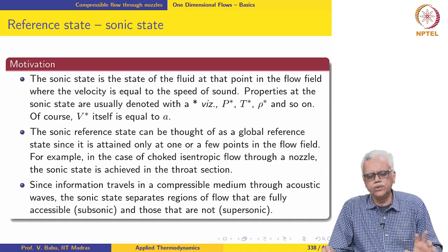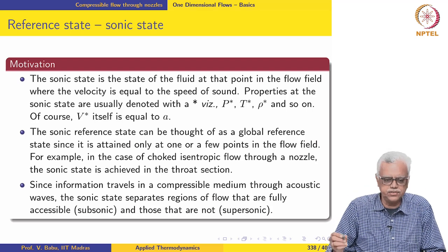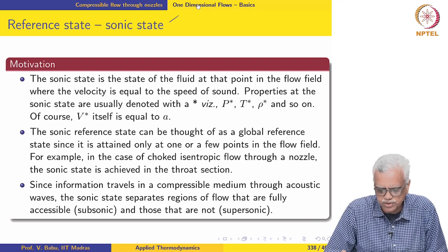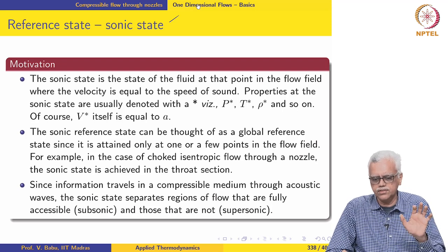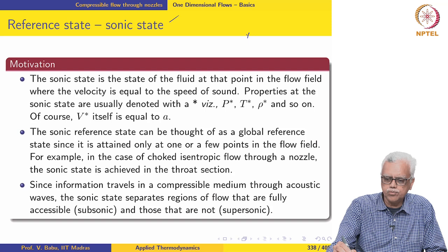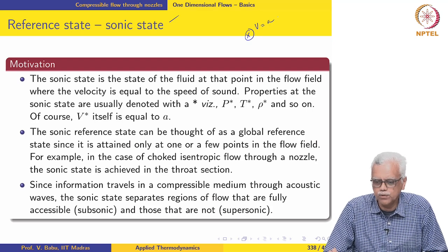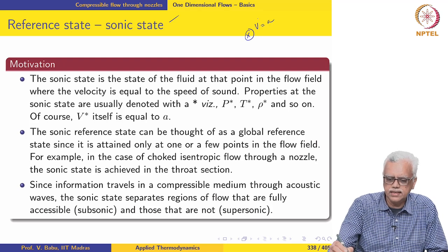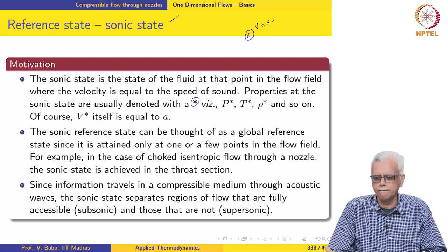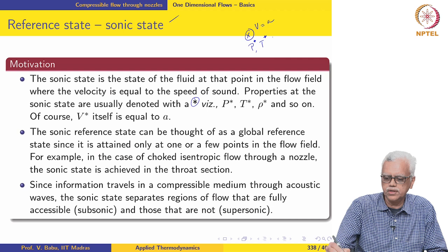We will discuss two reference states in this lecture: the sonic state and the stagnation state. The sonic state, as the name suggests, is the state of the fluid at a point in the flow field where the local velocity equals the local speed of sound — that is, the Mach number equals 1. Such a state is usually denoted using a superscript star, so the pressure at this state is P*, the temperature is T*, and so on.